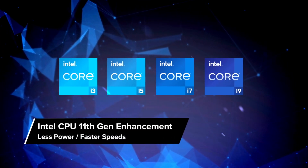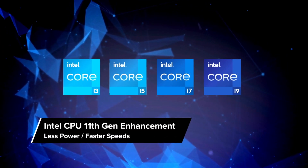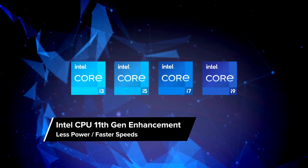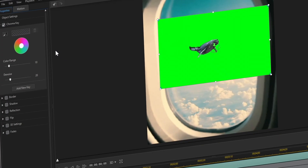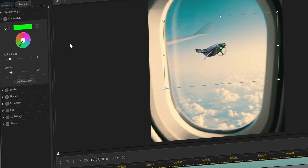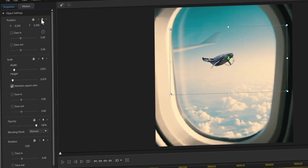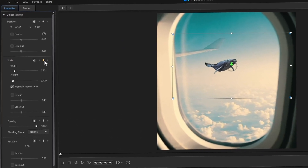PowerDirector now supports Intel's low power encoding for H.264 video. This is great news if you're using Intel's latest 11th generation CPU, as it means speedy encoding while greatly reducing power consumption. You may also feel PowerDirector is snappier with reduced loading times for key tools and features. This, plus a heap of UI changes, are all about improving workflow and making the editing experience more intuitive.